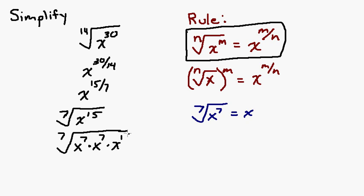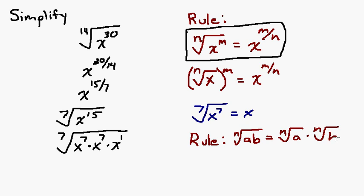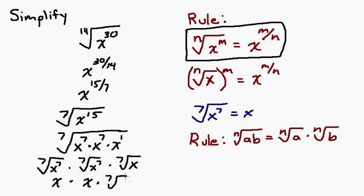Remember, when multiplying you add exponents. There's another rule we use: the nth root of ab equals the nth root of a times the nth root of b — if you have two things multiplied under a radical, you can split them up. So this becomes the 7th root of x to the 7th, times the 7th root of x to the 7th, times the 7th root of x. The 7th root of x to the 7th is just x, so we get x squared on the outside times the 7th root of x.